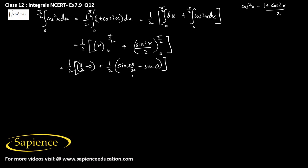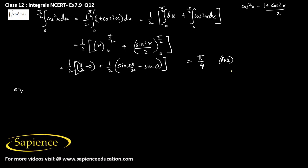Since sin(π) = 0 and sin(0) = 0, this part becomes zero. So the final answer from the first method is π/4. Alternatively, we can solve it by using the property of definite integrals.